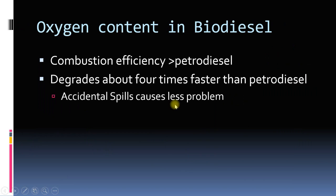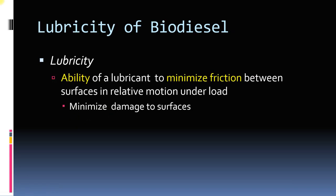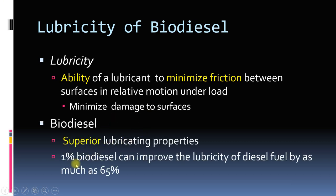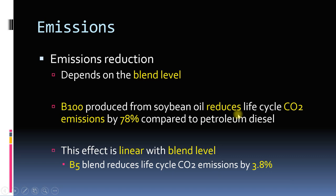Another advantage is that since oxygen is part of the biodiesel molecule, the combustion efficiency of biodiesel is greater than that of petrodiesel. Also, in the event of an accidental spill, biodiesel will degrade faster than diesel. Biodiesel also has superior lubricity — the ability of a lubricant to minimize friction between surfaces in relative motion under load. If just one percent biodiesel is used, it can increase the lubricity of diesel by 65 percent.